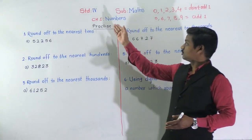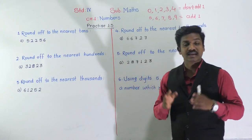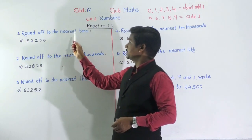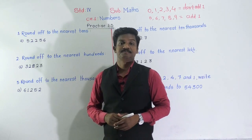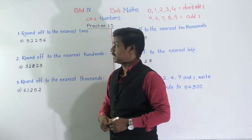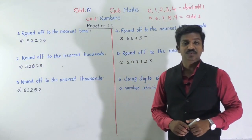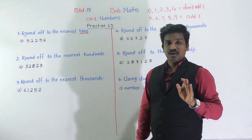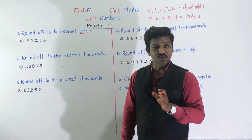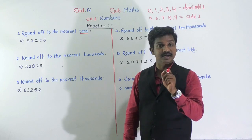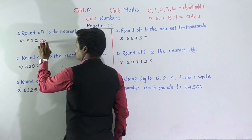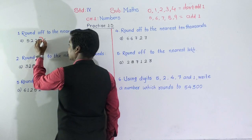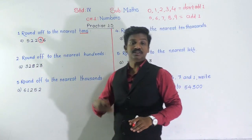Let's solve Practice 1.5 based on rounding off numbers. Question 1: round off to the nearest tens. Example A: 52,256 — we have to round off to the nearest tens. First, circle the tens place digit. Ones, tens — 5 is at the tens place, so we circle it. Then see the next digit of the circled digit: the next digit of 5 is 6.